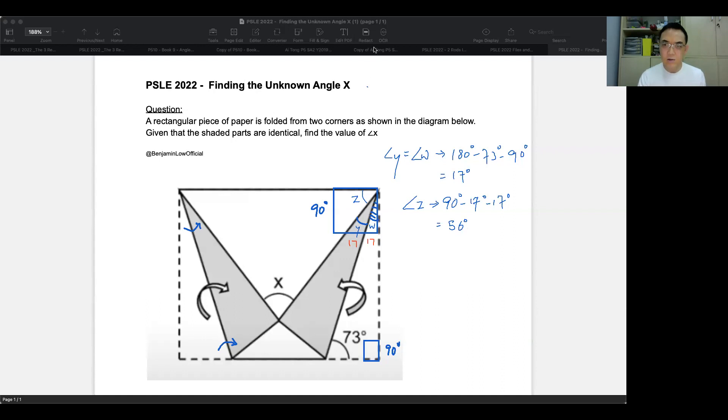So if this angle Z is found to be 56, and since it says here that the shaded parts are identical, then we can assume that since the shaded parts are identical, this angle should also be 56.